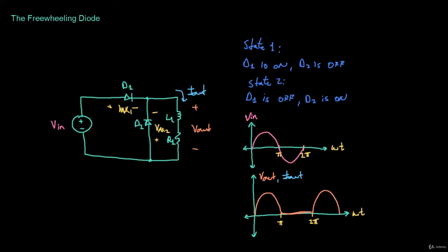For the output current, during state 1 where D1 is on and D2 is off, the current looks just like the previous example with the inductive load — it's lagging the output voltage. Then in state 2 the output current is no longer a sinusoid; it becomes a decaying exponential function dependent on the time constant of the circuit, of the form e^(−t/τ), where τ = L/R. So from 0 to π it looks like a sinusoid, and from π onward it decays exponentially, then repeats.